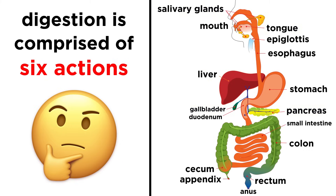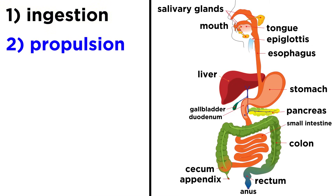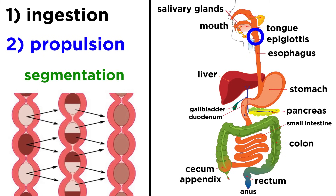All of these components work together to produce a sequence of six actions. First, ingestion. This is the basic act of eating, meaning putting food into your mouth. Next is propulsion. This begins when you swallow the food, and continues with involuntary peristalsis, which is part of the autonomic nervous system. These actions push food along the GI tract, down the pharynx and esophagus, and down into the stomach, eventually continuing through the intestines and out the anus. This happens with the help of an action called segmentation, or successive local constrictions in the GI tract.